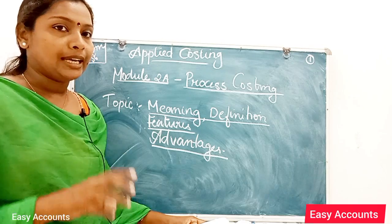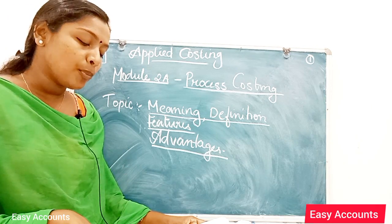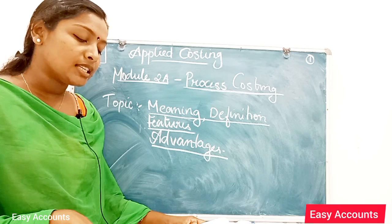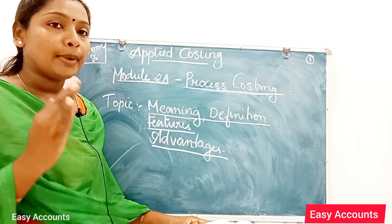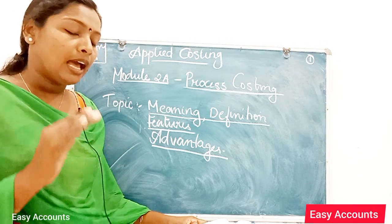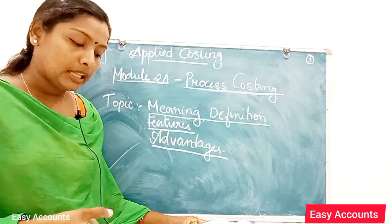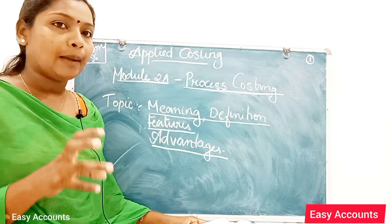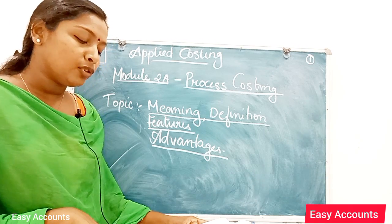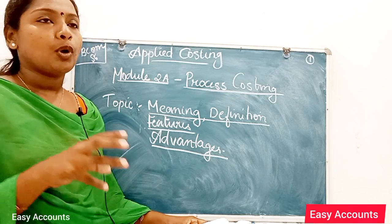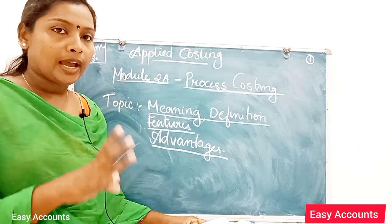The process of production can be divided into distinct stages. In many stages, the process of production is applied. In all stages, we will apply a method of costing, and the cost can be accumulated for each process separately.